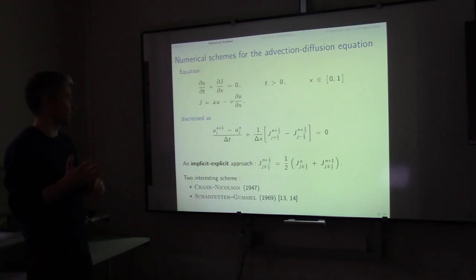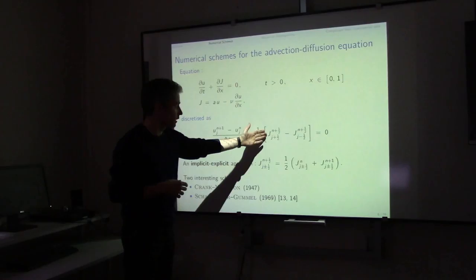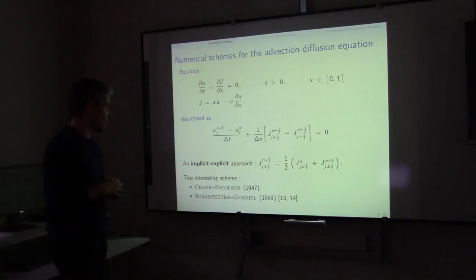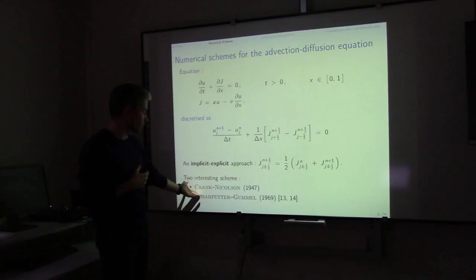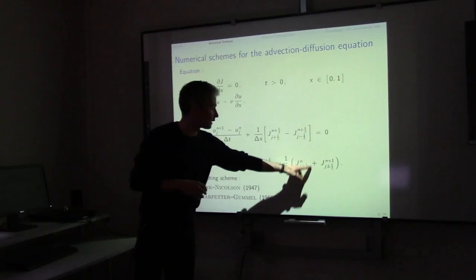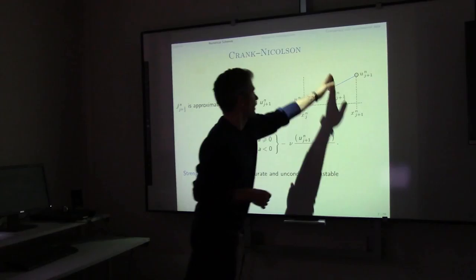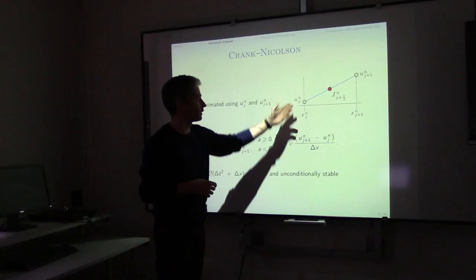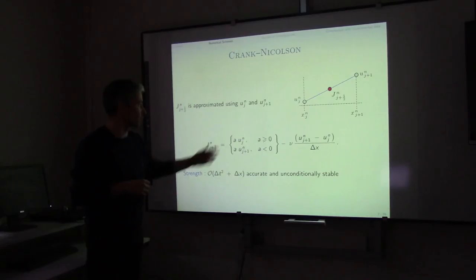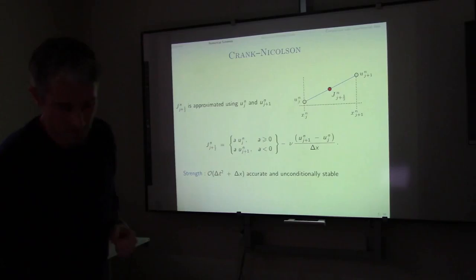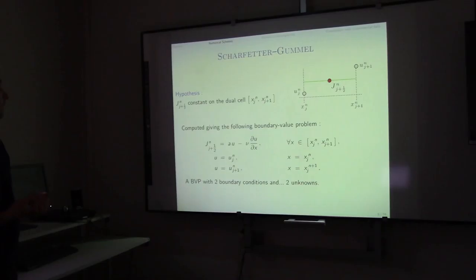The Crank-Nicholson approach expresses the flux at the half-point between x_G and x_{G+1}, using values U_G and U_{G+1}. The diffusive term is approximated accordingly, and the advective term depends on the sign of A. A key strength of this scheme is that it is unconditionally stable.